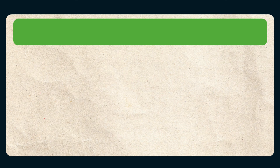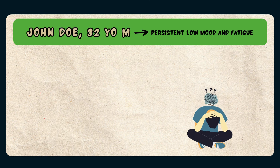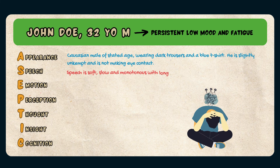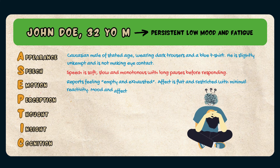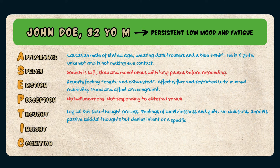Let's run through a quick example. John Doe is a 32-year-old male presenting with persistent low mood and fatigue. He is a Caucasian male of stated age, wearing dark trousers and a blue t-shirt; he's slightly unkempt and not making eye contact. His speech is soft, slow, and monotonous with long pauses before responding. John reports feeling empty and exhausted. His affect is flat and restricted with minimal reactivity, and his mood and affect are congruent. He does not report any hallucinations and is not responding to any external stimuli.